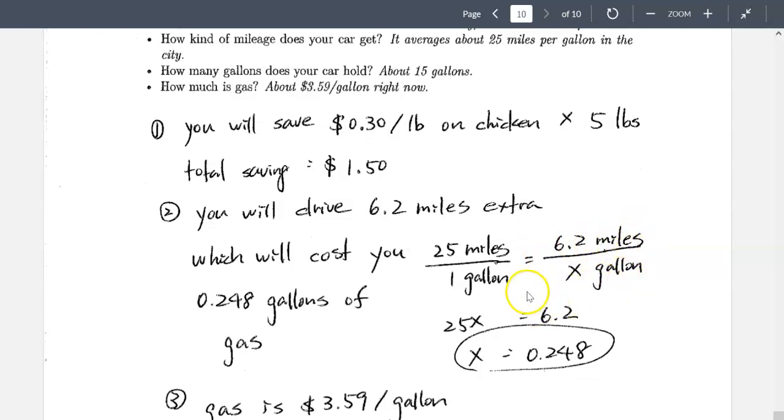So if you set it up, we have miles on top, gallons on the bottom, cross-multiply, you tell us that, okay, with my car, which can drive 25 miles per gallon, will cost 0.248 gallons of gas to drive 6.2 miles to get to the further store.